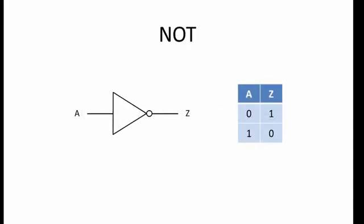Let's begin by reviewing the building blocks. This is a NOT gate. The input has been labelled A, and the output has been labelled Z. You can see in the truth table that when A is 0, Z is 1, and when A is 1, Z is 0.